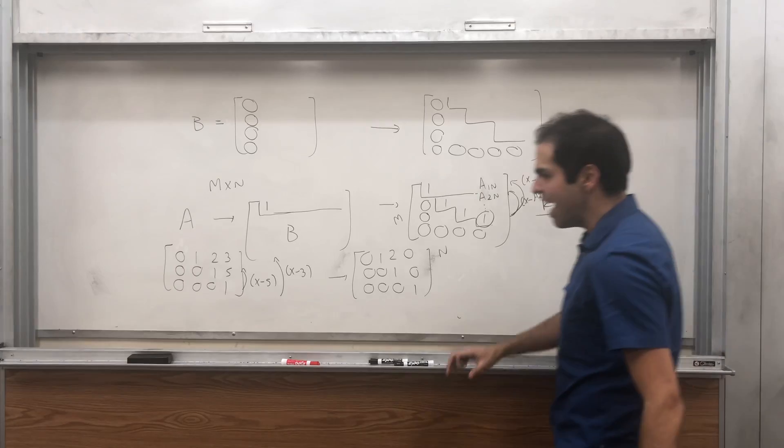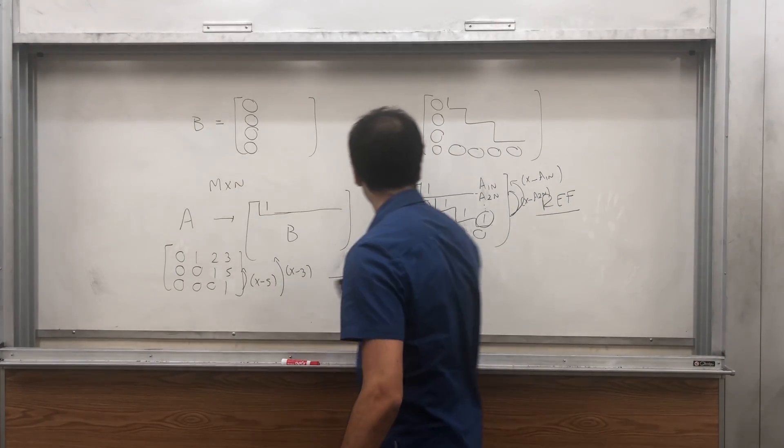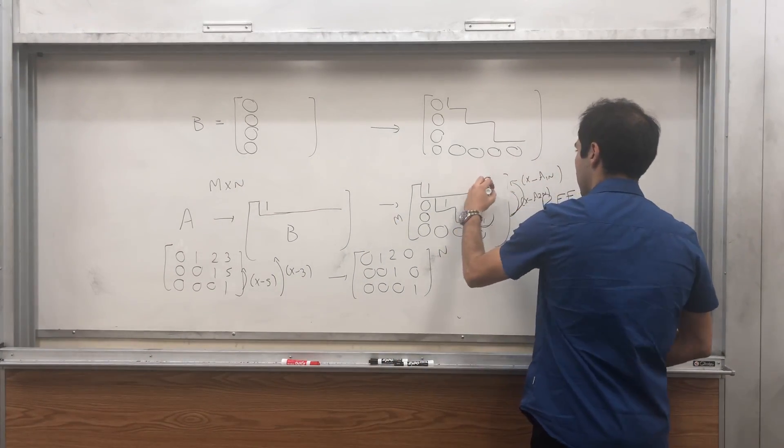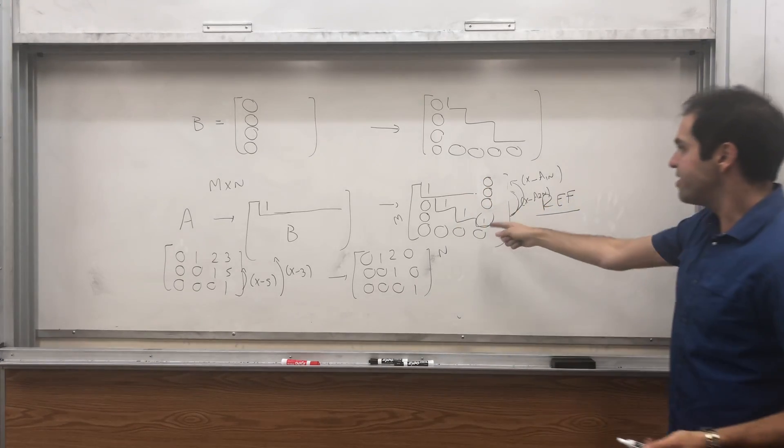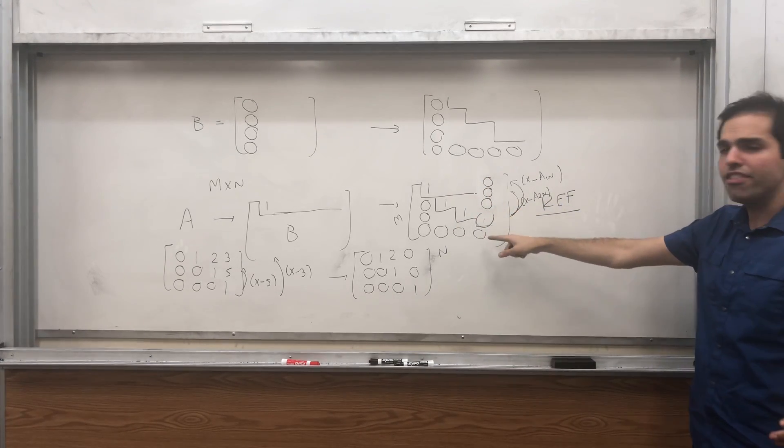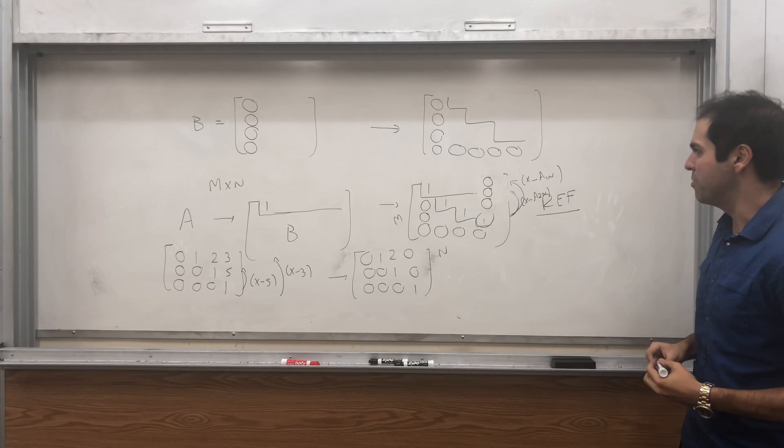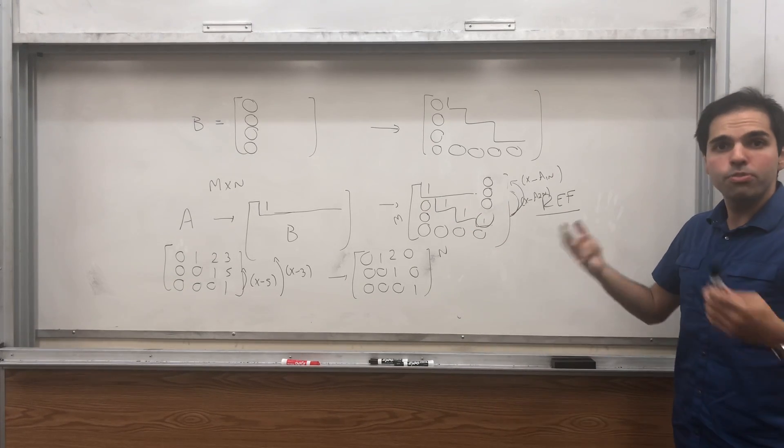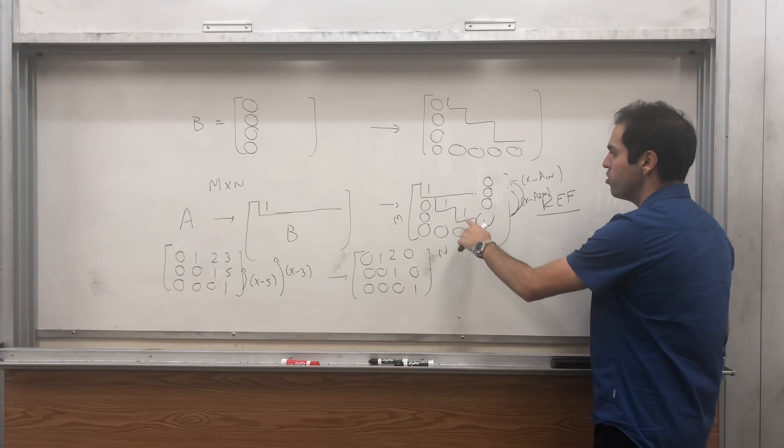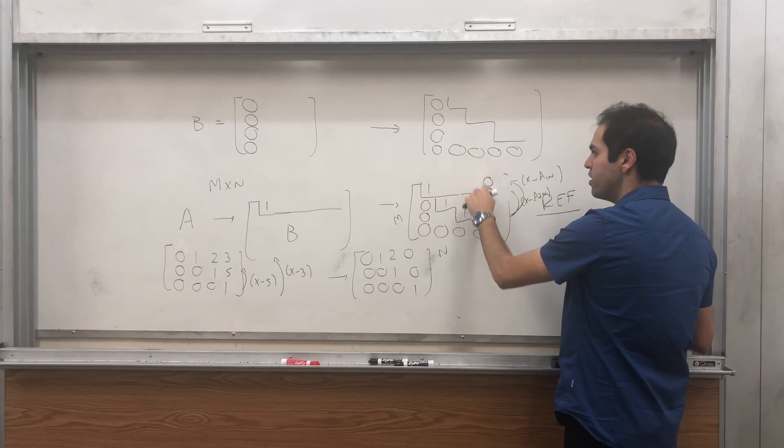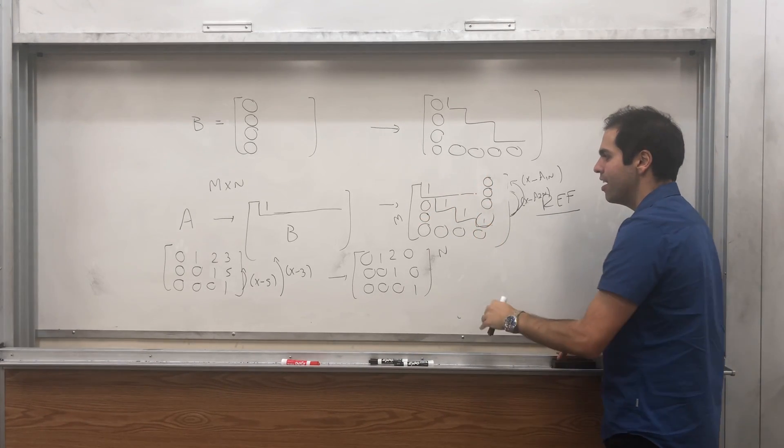So at least the last column, you can turn it into a bunch of 0s, and then essentially repeat everything for all the other columns. Now, the only objection you might possibly have is, well, if you do row reduction, wouldn't that change this column?